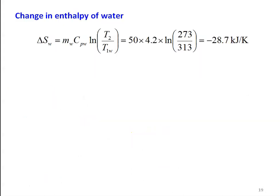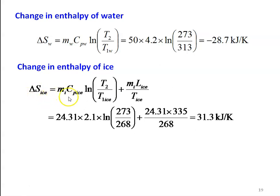Change in entropy of water: ΔSw = MW·CPW·ln(T2/T1w) = 50 × 4.2 × ln(273/313) = −28.7 kJ/K. Change in entropy of ice: ΔSice = MI·CPI·ln(T2/T1ice) + MI·LI/T2 = 24.31 × 2.1 × ln(273/268) + 24.31 × 335/273 = 31.3 kJ/K.